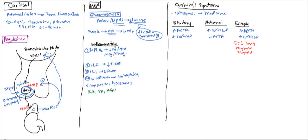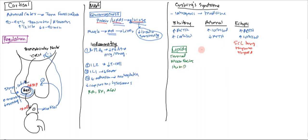Now let's look at the symptoms of Cushing's syndrome. We can divide them by the functions of cortisol: it affects proteins, lipids, glucose, and ACTH. Starting with lipids — cortisol redistributes fat, giving truncal obesity, moon facies where the face becomes very round, and a buffalo hump on the back.